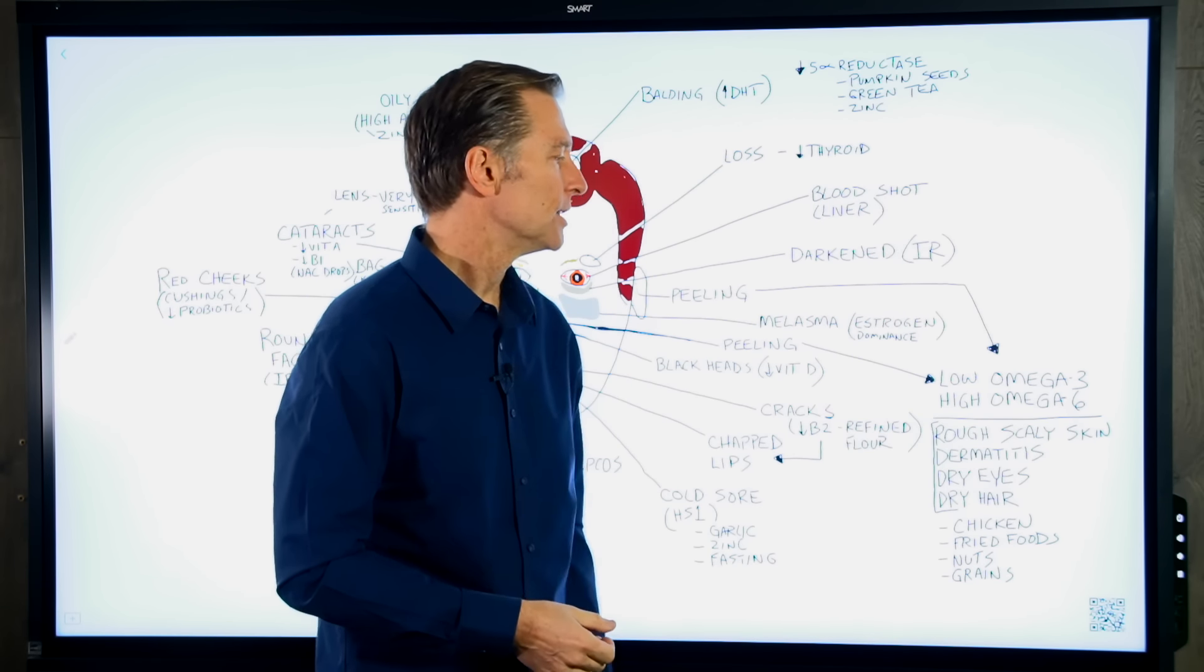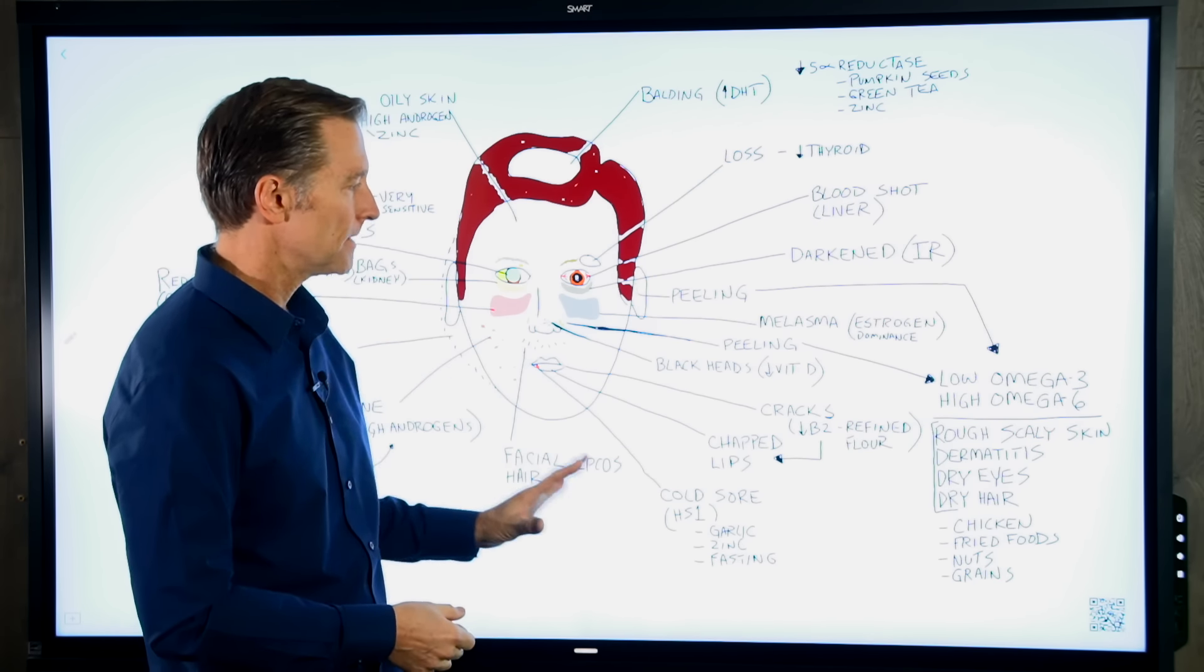And quite a few people have a severe imbalance and they're just really heavy on the 6 and low on the 3. So that means they need to consume more cod liver oil, fatty fish to bring these back in balance. But if you have this imbalance, you'll have rough scaly skin, dermatitis, a lot of skin issues, inflammation of the skin, dry eyes, and dry hair.